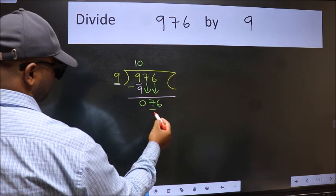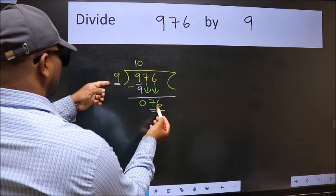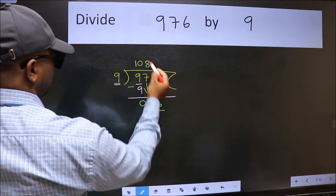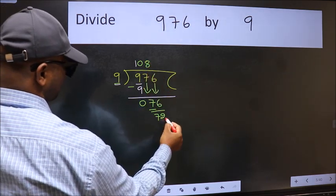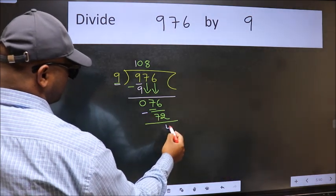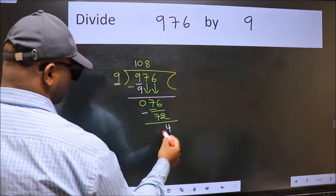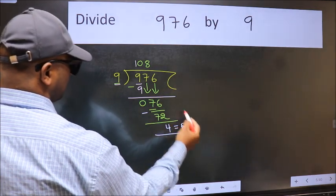Now 76. A number close to 76 in nine table is nine eights, 72. Now we should subtract. We get four. No more numbers to bring down, so we stop here. This is our remainder.